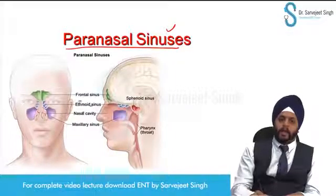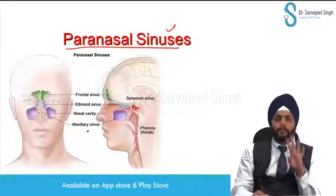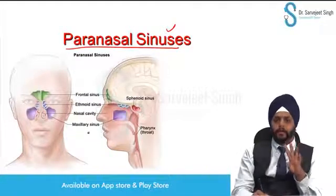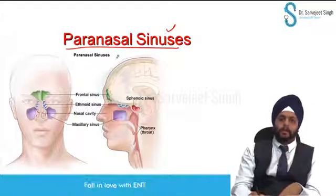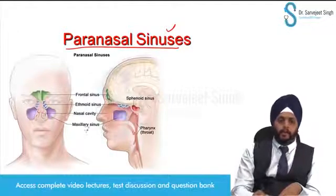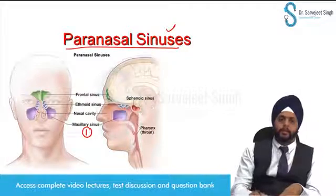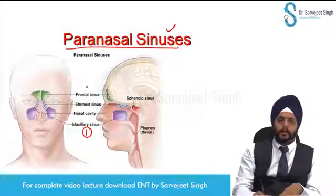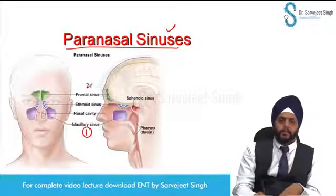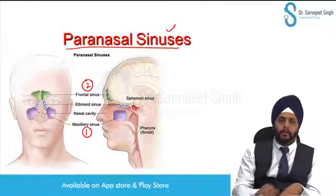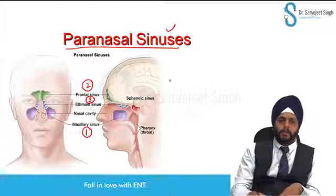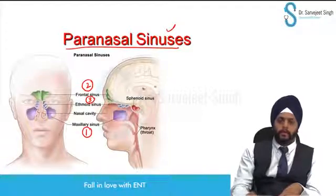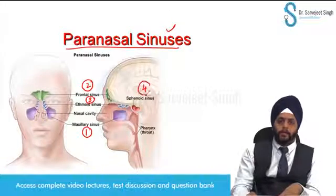How many paranasal sinuses are there? We have four pairs, four on each side. The four paranasal sinuses are: number one, the maxillary sinus; number two, the frontal sinus; number three, the ethmoid sinus; and number four, the sphenoid sinus.